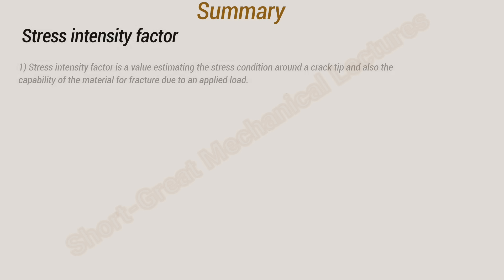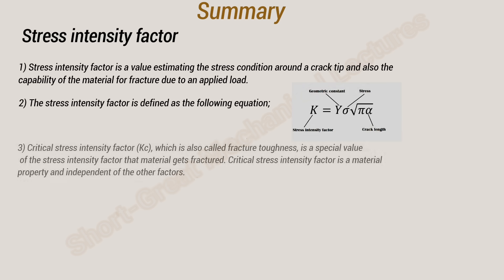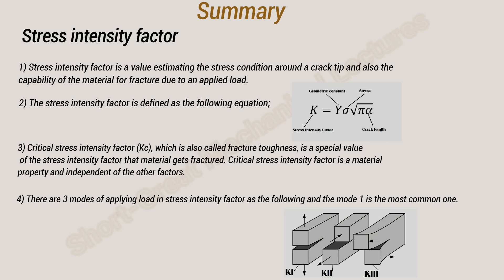Concerning the stress intensity factor: it is a value estimating the stress condition around a crack tip and the capability of the material for fracture due to an applied load, defined by the equation shown. The critical stress intensity factor, Kc, also called fracture toughness, is a special value of the stress intensity factor at which the material fractures — and it is a material property, independent of other factors. There are three modes of applying load in stress intensity factor, and mode 1 is the most common.